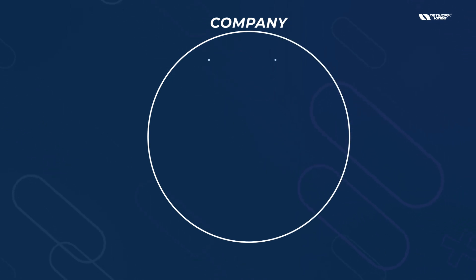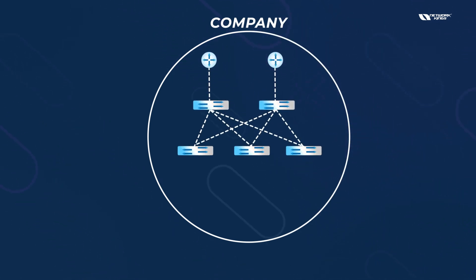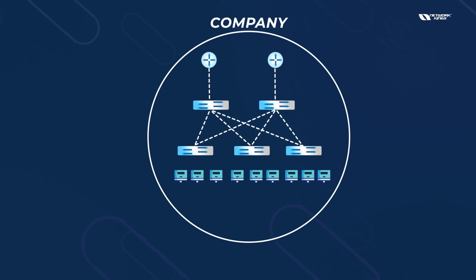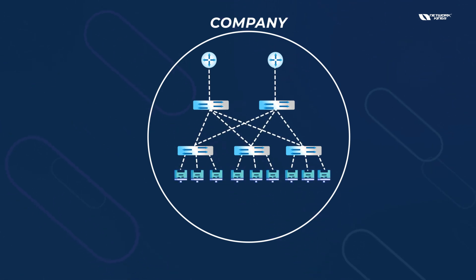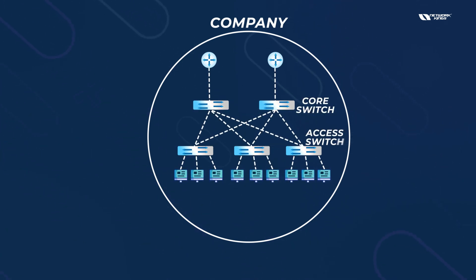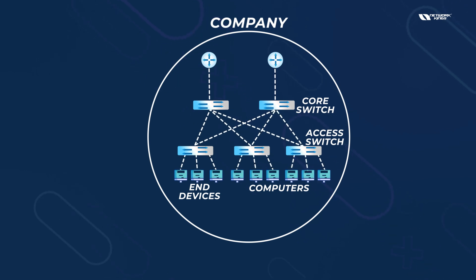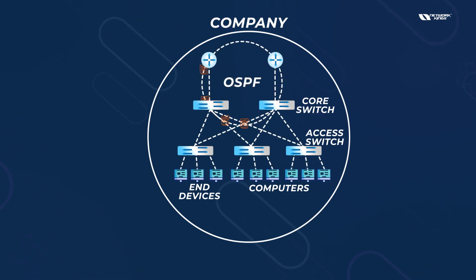Suppose this is your company — you have two routers, core switches, access switches, and computers as end devices. All computers connect together through the access switches, which are connected to the core switches. Between these four devices, we need to share information with each other, so here we run OSPF if it is a very small network.